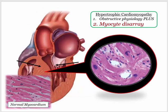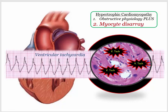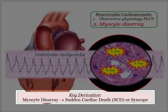We'll now move on to the key pathologic description characterized by myocyte or myofiber disarray. Pictured on the lower left is the orderly arrangement of cardiac myofibers in a neat parallel pattern. Compare that with the chaotic appearance that characterizes hypertrophic cardiomyopathy. This disorganized arrangement of myofibers doesn't just account for the hypertrophic phenotype — it has a much more sinister association: cardiac dysrhythmia. Patients with hypertrophic cardiomyopathy are at risk of sudden cardiac death due to fatal arrhythmias. Myocyte disarray places patients at risk for sudden cardiac death and/or syncope.